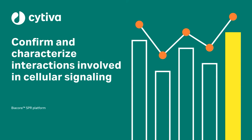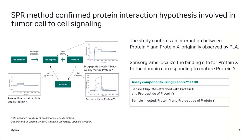We will now move over to application examples where BEACOR systems were used to confirm and characterize interactions involved in cellular signaling. This study focuses on protein X and protein Y. Protein Y is involved in several processes in the body; it is synthesized as a precursor protein called proprotein Y, which undergoes post-translational modifications and intracellular processing before it is secreted from the cell in its mature form. Protein X is known to be upregulated in certain types of cancer, and protein Y has been used in attempts to block the function of protein X; however, this gave rise to serious side effects in the clinic.